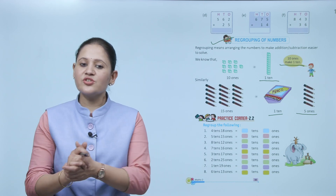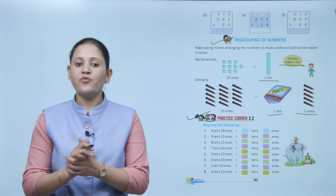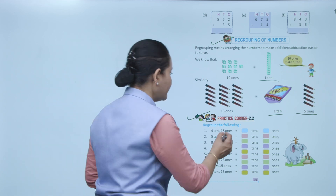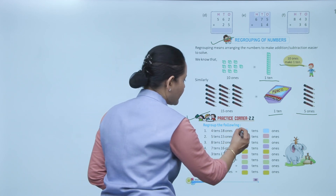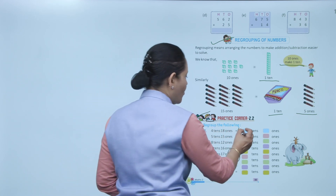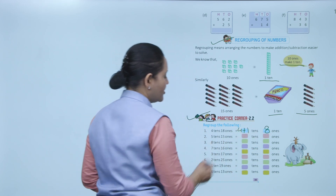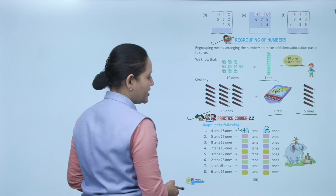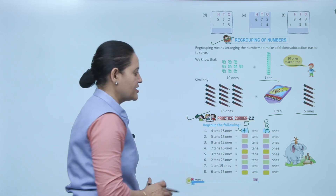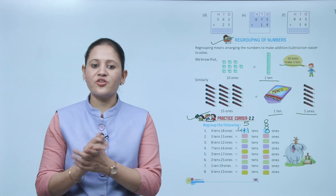Practice 2.2 — regroup the following: 4 tens and 18 ones. Since 18 ones equals 1 ten and 8 ones, we add that ten to the 4 tens to get 5 tens and 8 ones. The number is 58. Like this, we will regroup the numbers.